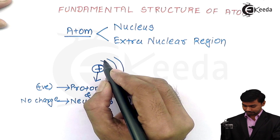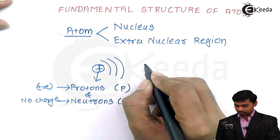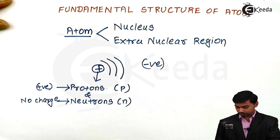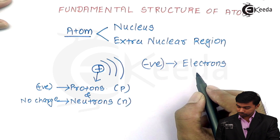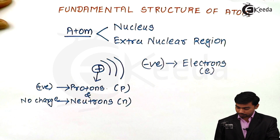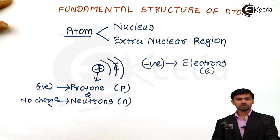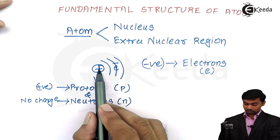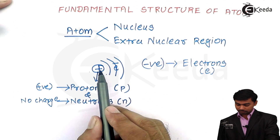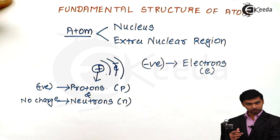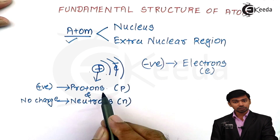Now, what is the extra-nuclear region? It is the region around the nucleus. This extra-nuclear region contains negatively charged particles — those negatively charged particles are nothing but electrons, denoted by the symbol 'e'. Electrons carry a negative charge and are present in the extra-nuclear region. The nucleus is positively charged and electrons are negatively charged, so these oppositely charged particles attract each other and together form the atom.